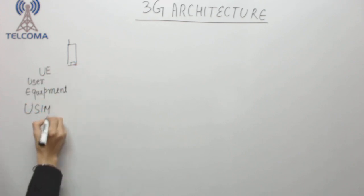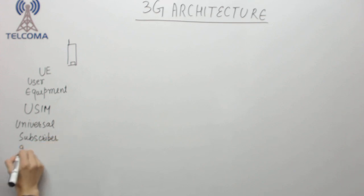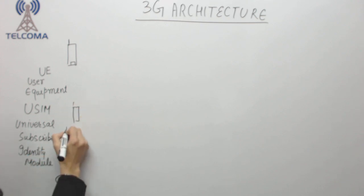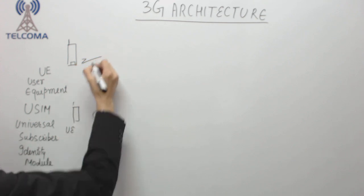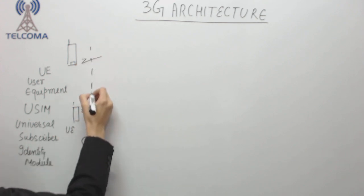USIM is Universal Subscriber Identity Module. So we have UE. Now this UE is attached with the help of the radio part with the RAN.